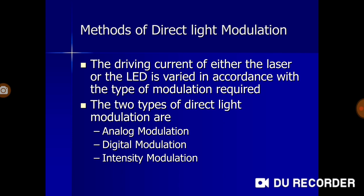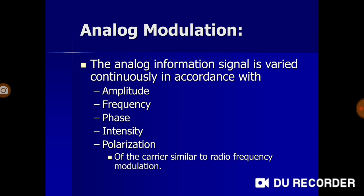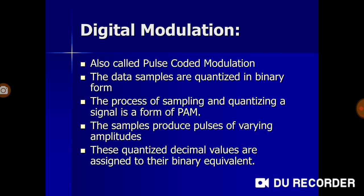Intensity modulation is applicable to both analog and digital modulation and is the most dominant method of modulation at present. For analog modulation, the analog information signal is varied continuously in accordance with amplitude, frequency, phase, intensity, or polarization of the carrier — similar to radio frequency modulations studied in other subjects.